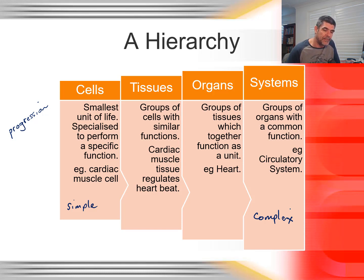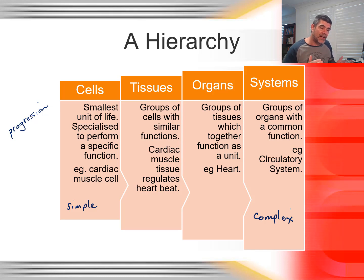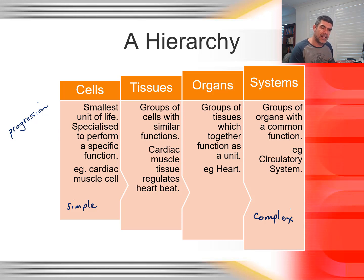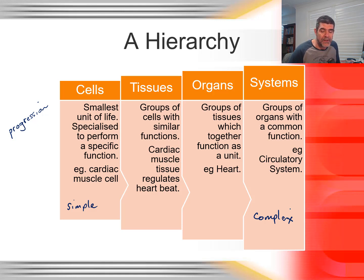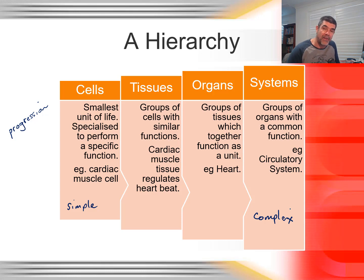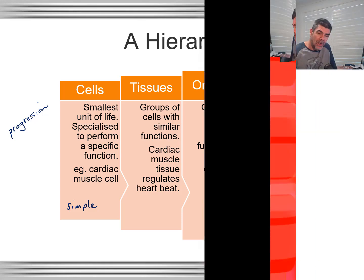The important thing for you to be looking at here, in terms of this hierarchy, is understanding how we progress from cells — looking at different types of cells and the differences between them — how those cells group together to form tissues, how different tissues come together to form organs, and how different organs work together as part of a broader body system.